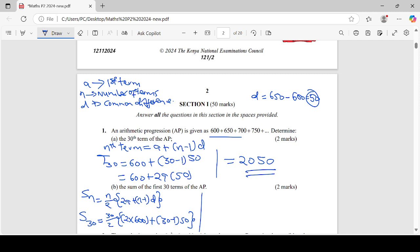This is going to be 30 over 2, it is going to give you 15 into 2 times 600, you are going to get 1200, then plus 30 minus 1 is 29 times 50, you are going to get 1450. This will be now 15 into 1450 plus 1200, we are going to get 2650. Then after we've gotten 2650, learners will now multiply that by 15 to get 39,750.